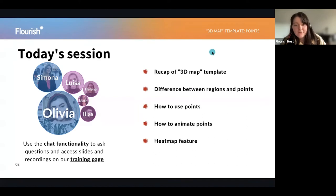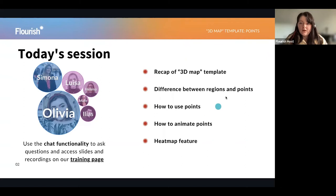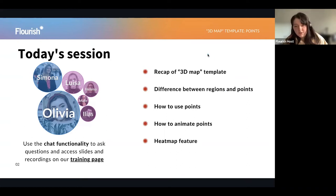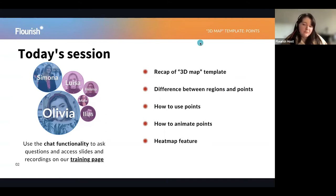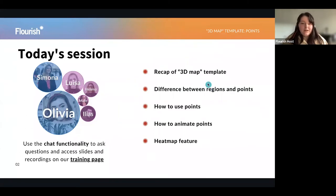So today's session we're going to have a quick recap of our 3D map template and look at what happened in the previous webinar. We're then going to have a look at the difference between regions and points. As this one's focusing on points, I'll quickly show you the difference between them, how to use points, how to animate points, and finally I will end on our heat map feature, which is one of our newest features added to our 3D map template.